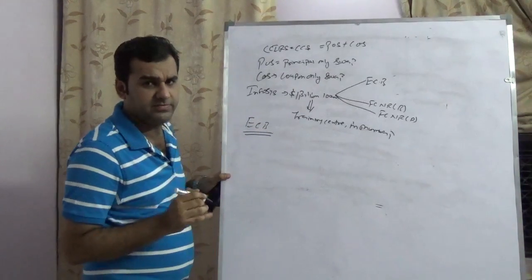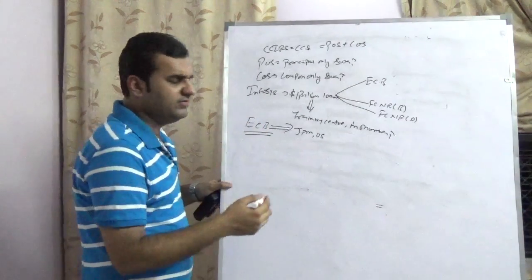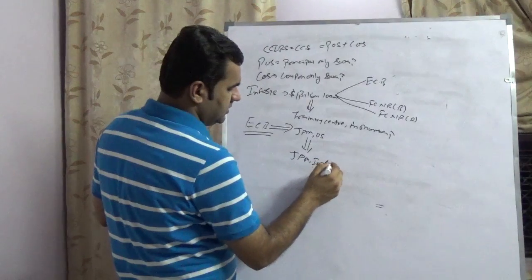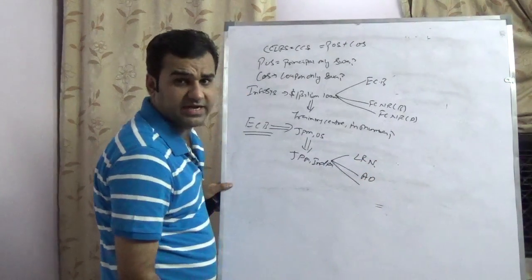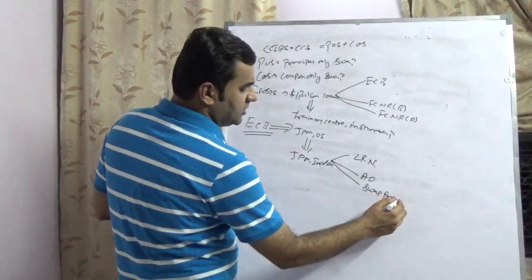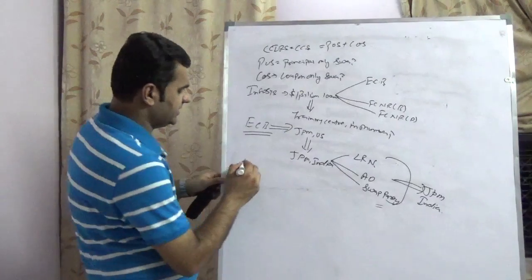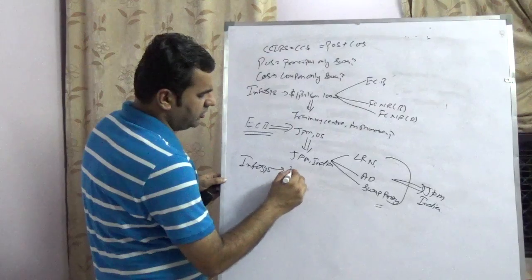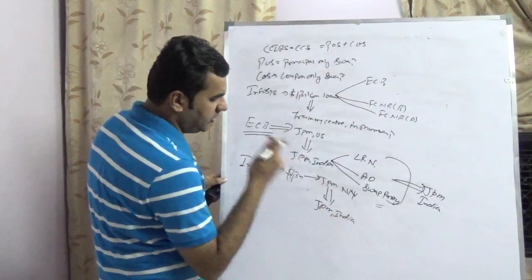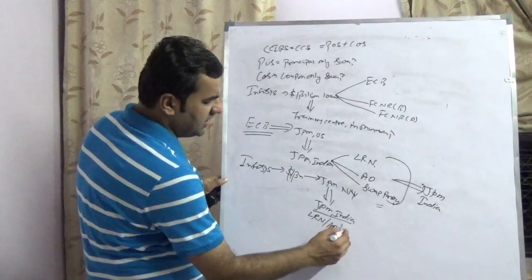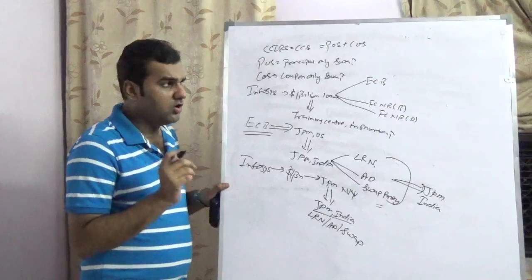Infosys is taking a one billion dollar loan from JP Morgan US. Since the funds have to come into India, they will come through JP Morgan India. In this example, JP Morgan India will act as the lending party, the authorized dealer party, and the swap party — so all three roles are with JP Morgan India. Infosys wants to do a cross-currency swap on this loan.